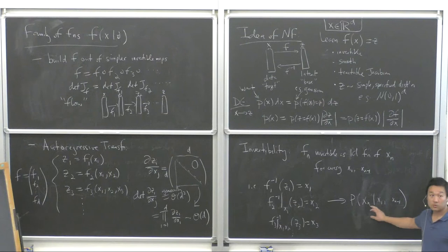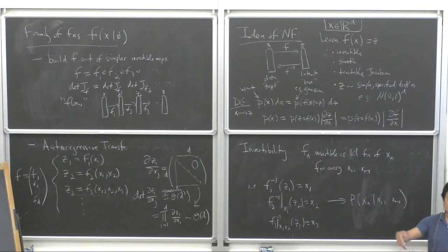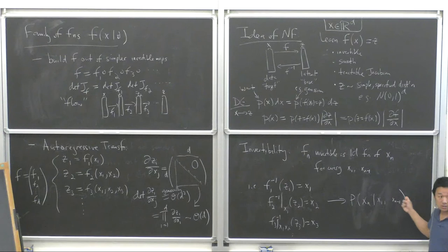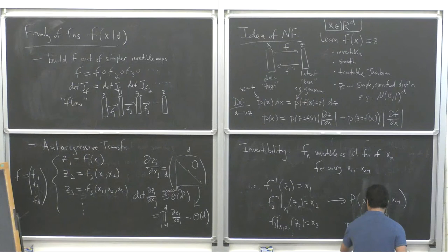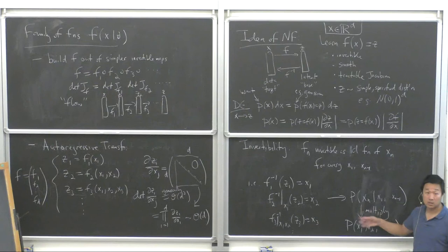That's why this is called autoregressive: I have a D-dimensional vector as a sequence, and I'm learning the next element conditioned on all the previous ones. If you multiply together all these conditional probabilities, you get the full joint distribution of all the Xs. This way of learning a generative model is also how large language models work — they predict the next element of a sequence.